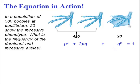Now, since we know that 20 have the recessive phenotype, we actually know q squared. So, we could say that q squared is equal to 20 boobies out of the total population of 500, which is 0.04. Once we know q squared, we can find q. We just take the square root.